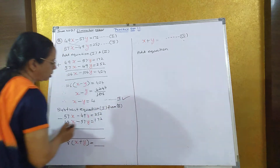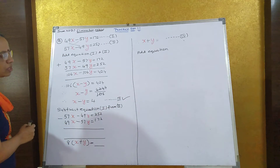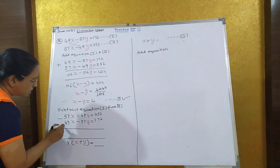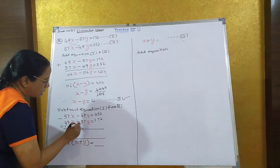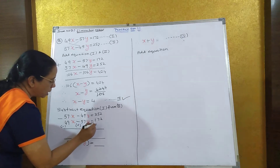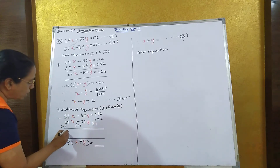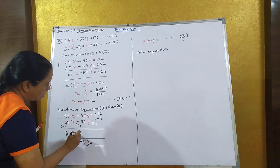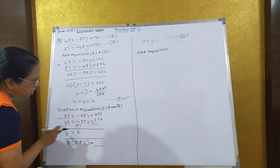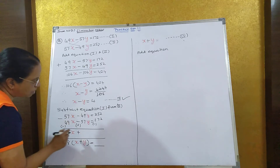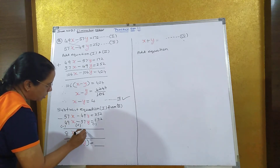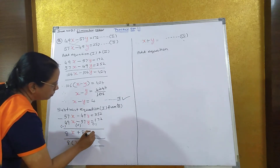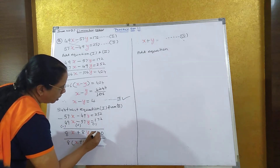Let us take this as equation 3. Now subtract equation 1 from 2. When you subtract both the equations, the signs will change — this will become minus, this will become plus, and this will become minus. When you subtract this, you get 8x plus y. Because 57 is a bigger number, the sign of the bigger number is plus, so it will be plus 8y.